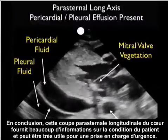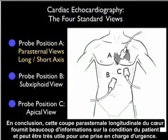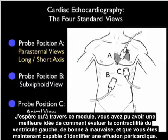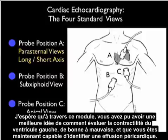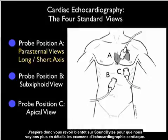In conclusion, the parasternal long axis view of the heart gives a great deal of information about our patient's condition and can be instrumental in emergency care. Through this module, I hope you'll now have a better idea on how to grade left ventricular contractility as good through poor, and also to be able to identify the presence of a pericardial effusion. I hope to see you back as SoundBytes continues and we look further at the cardiac echocardiography examinations.